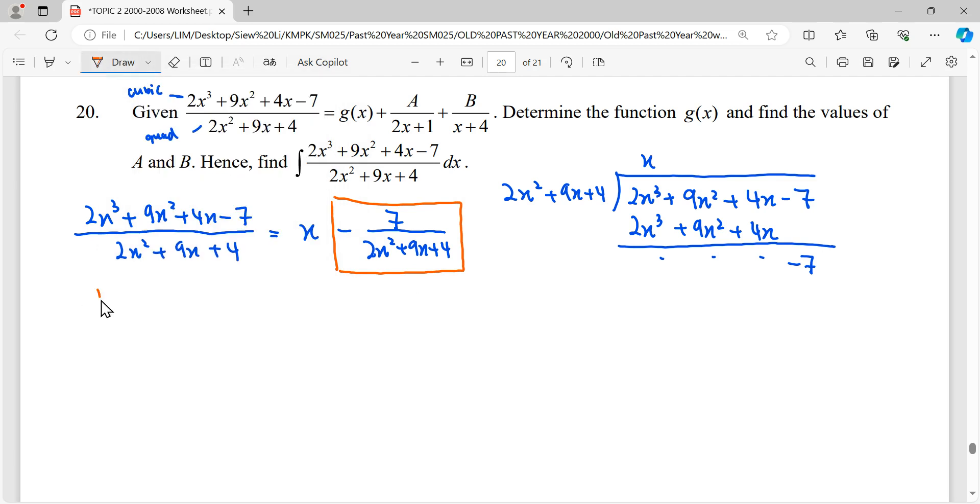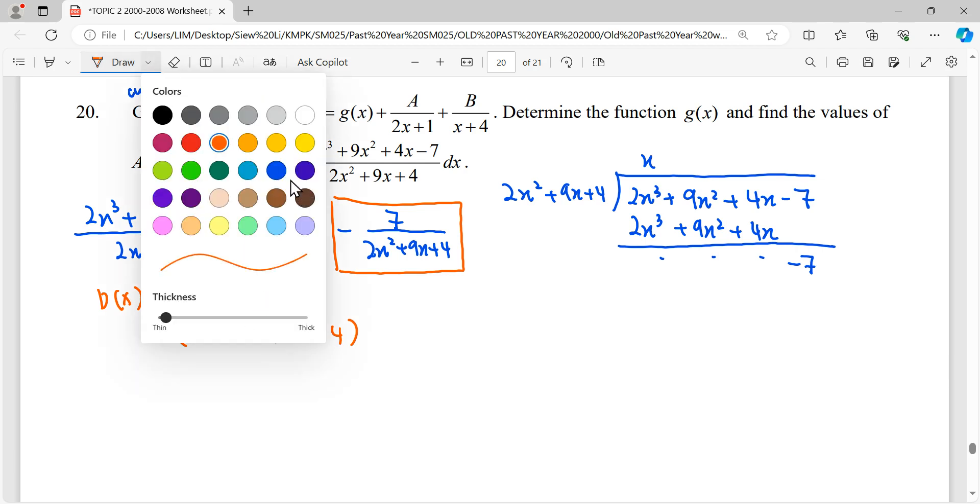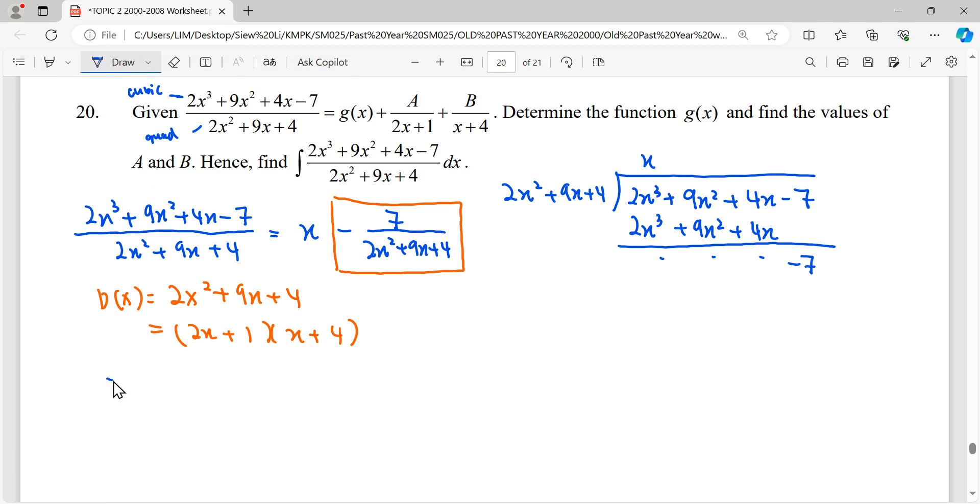So to get partial fraction, second step, we have to factorize the denominator completely. So this quadratic we can factorize it to be 2x plus 1 and then x plus 4. So the proper fraction here.